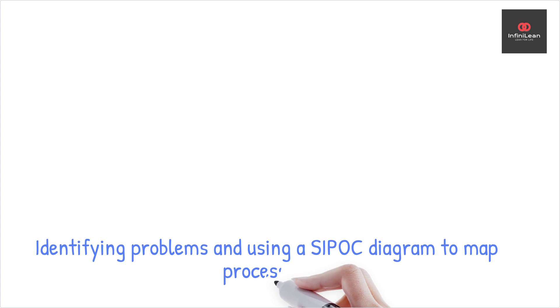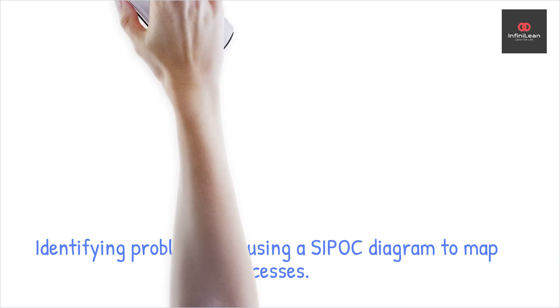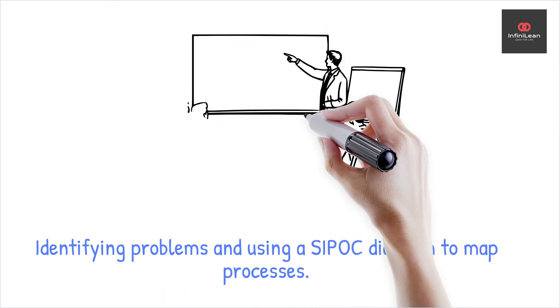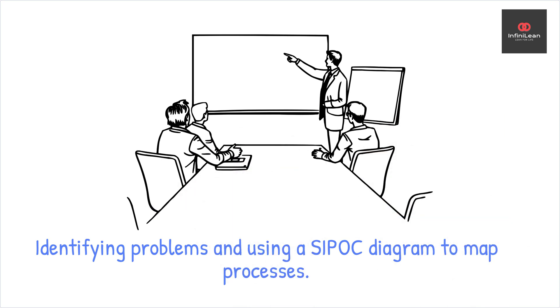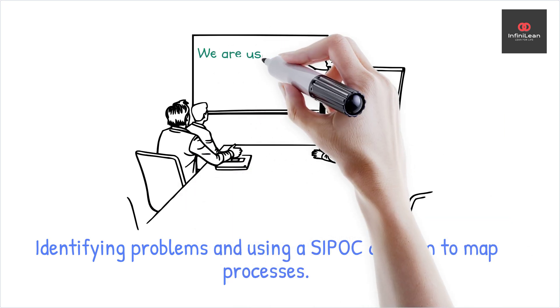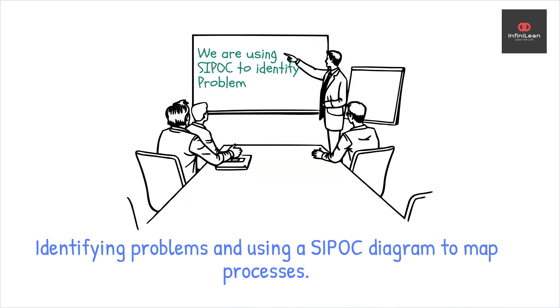To begin with, identify the problem you're trying to solve. Gather your team and work collaboratively to pinpoint the issue. To map out the process and clarify the scope, you might use tools like a SIPOC diagram for suppliers, inputs, processes, outputs, and customers.